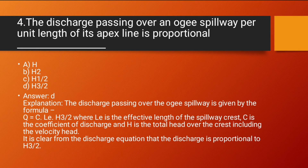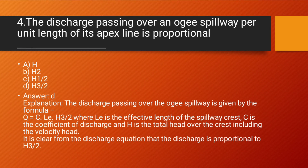Question number 4: The discharge passing over an Ogee spillway per unit length of its crest line is proportional to — Option A: H. Option B: H to the power 2. Option C: H to the power 1/2. Option D: H to the power 3/2.